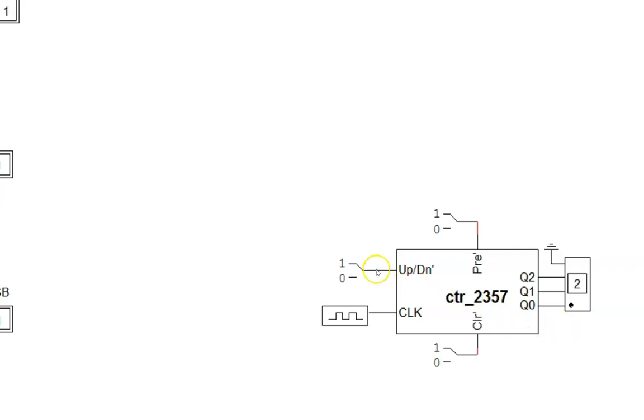And check this out. We can reverse the count by flipping the switch. Now notice how the count goes 7, 5, 3, 2, and then recycles back to 7. Also notice that we don't see glitches in this display. That is because this was designed as a synchronous counter.